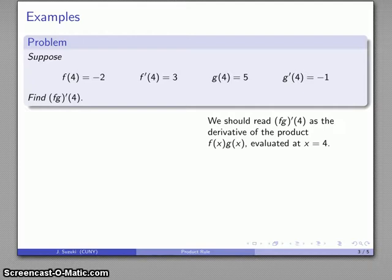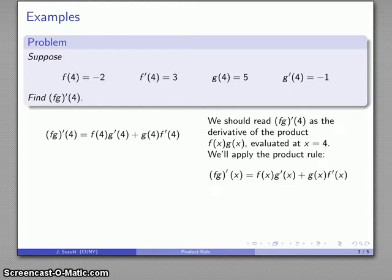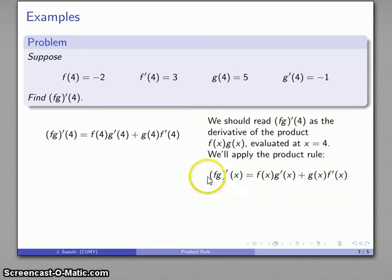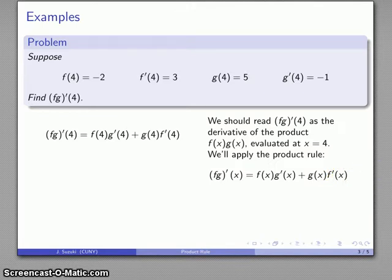The first thing we probably should do is just write down the product rule. Our general product rule: if I want to find the derivative of the product, it's the first times the derivative of the second, plus the second times the derivative of the first. After you write this down about 10, 20, 30, 40, 500 times, you'll start to remember it. You don't have to commit it to memory; you just have to write it down and use it. So I want to find the derivative of the product at 4, and I'll just copy down the product rule, except I'll use the actual x value I'm interested in.